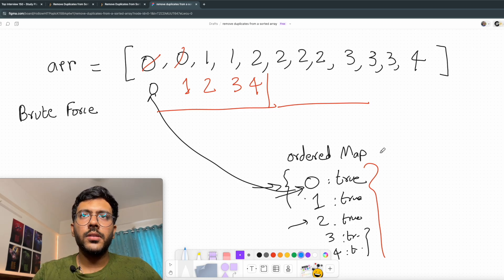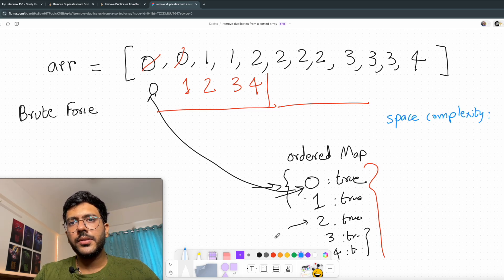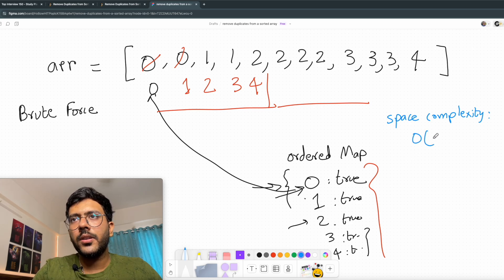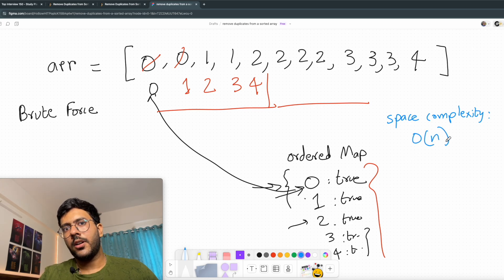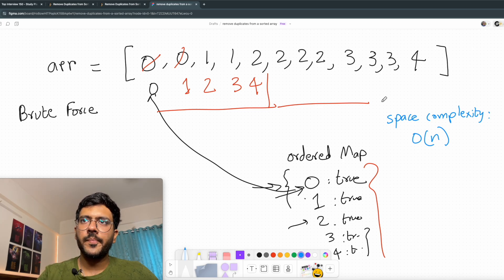Talking about space complexity, I had to use a whole new map to store the unique elements. So the space complexity will be order of n. Now the size of the map will be n in case all the elements of my input array are distinct. In that case, my map will have all the elements.